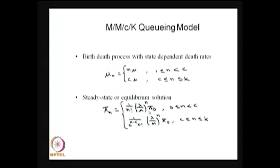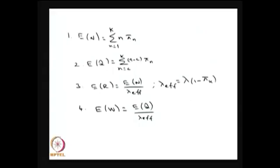First solve pi Q equals 0, writing pi N in terms of pi 0, then use the normalizing condition: the summation of pi N equals 1 to get pi 0. Substitute pi 0 back to get pi N completely. After that you can get all other average measures, similar to how I explained MM1N and MMC-infinity.